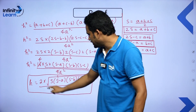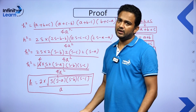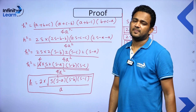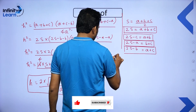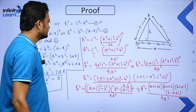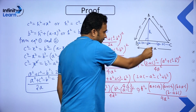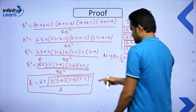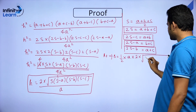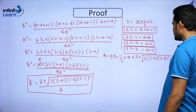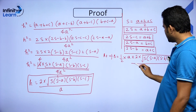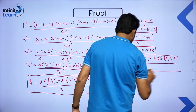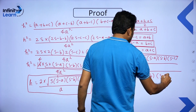Now use the area formula: Area = ½ × base × height = ½ × A × H. Substituting H = 2√[S(S−A)(S−B)(S−C)] / A, we get Area = ½ × A × 2√[S(S−A)(S−B)(S−C)] / A. The A and 2 cancel, giving us Area = √[S(S−A)(S−B)(S−C)], which is exactly Heron's formula.